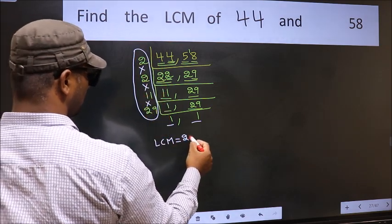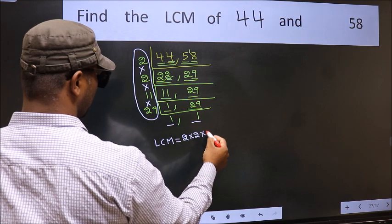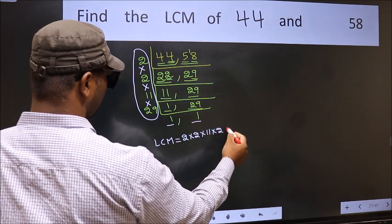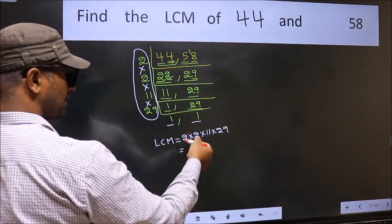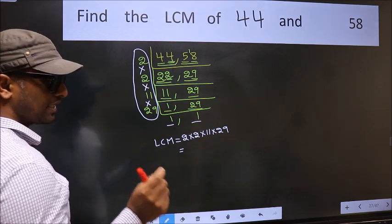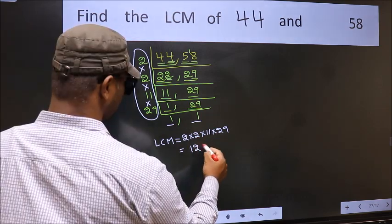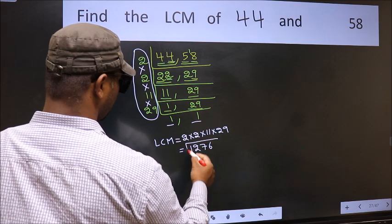That is 2 times 2 times 11 times 29. When we multiply these numbers, we get 1276 is our LCM.